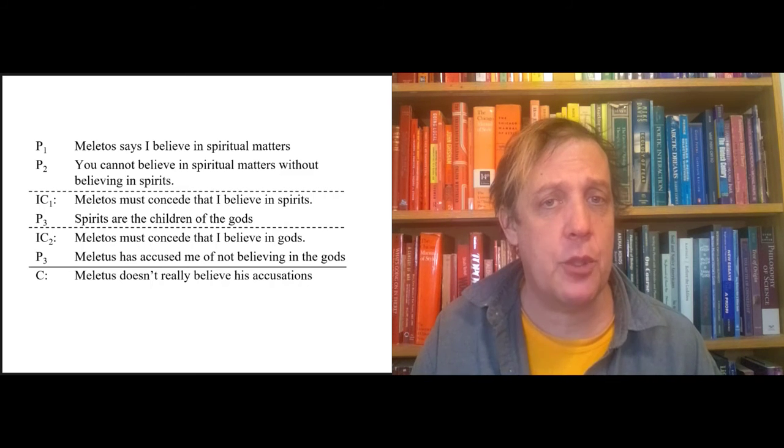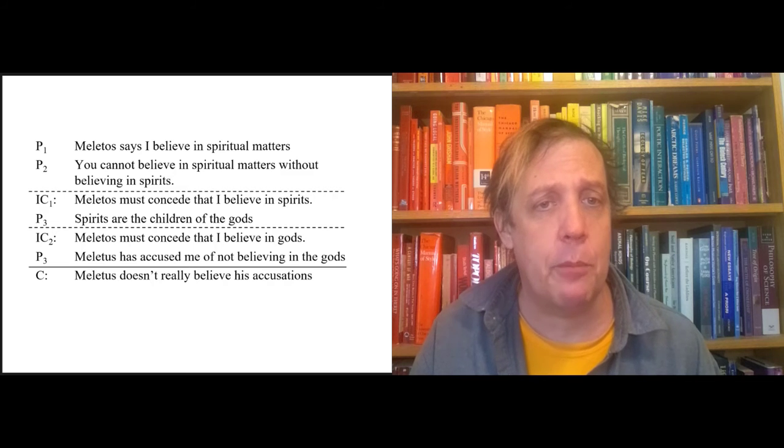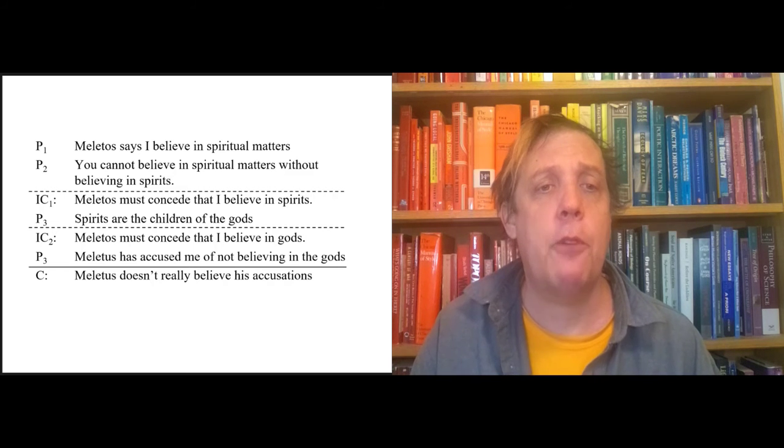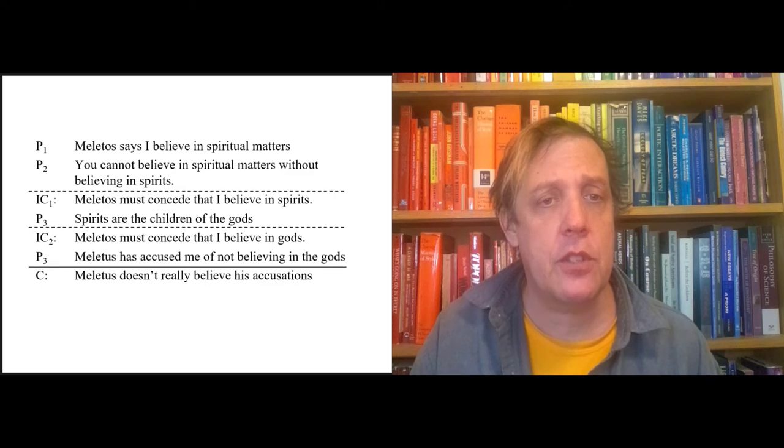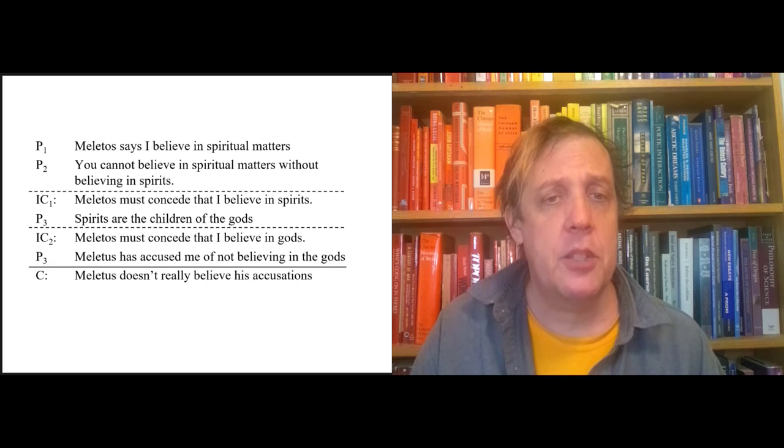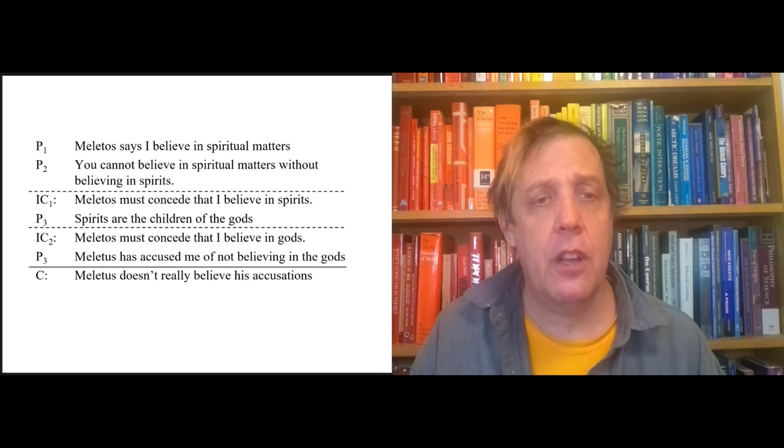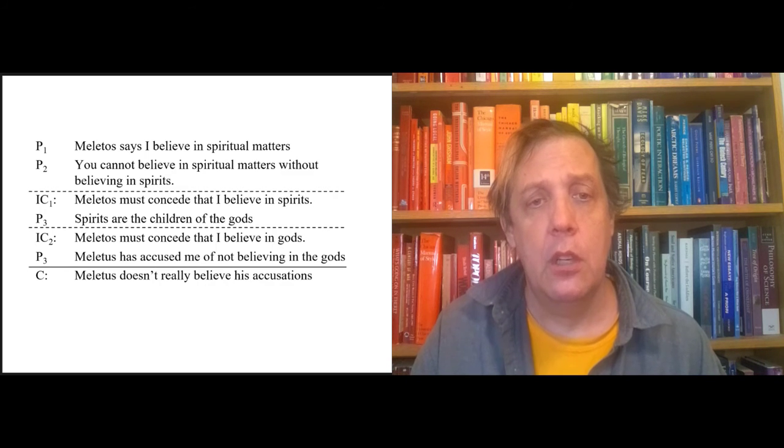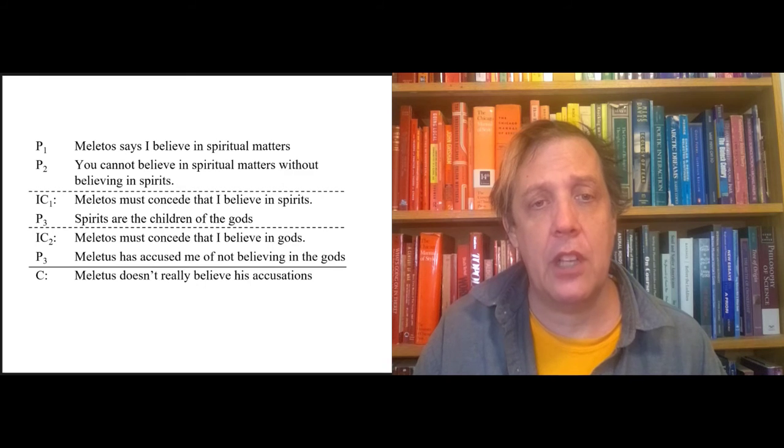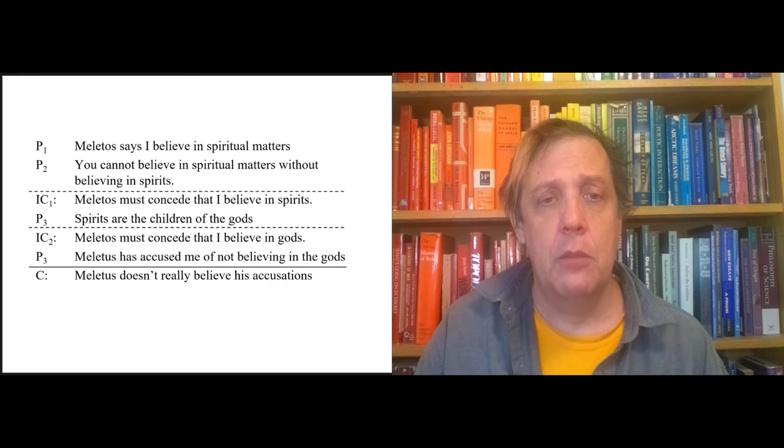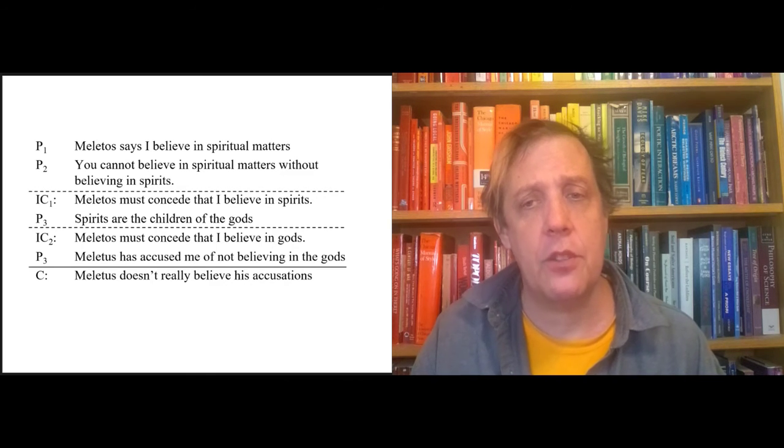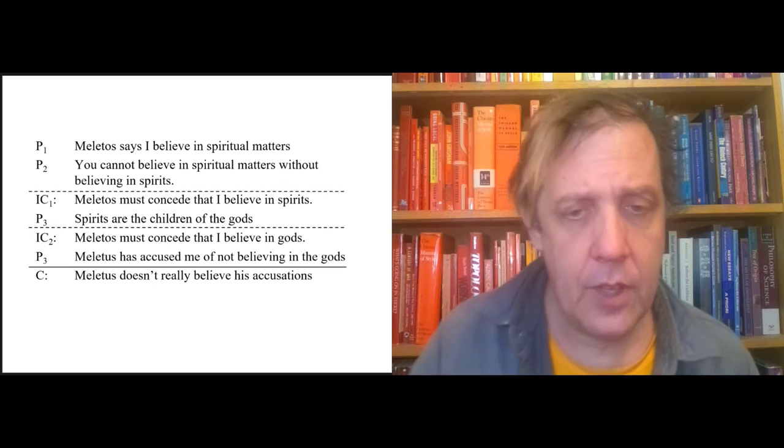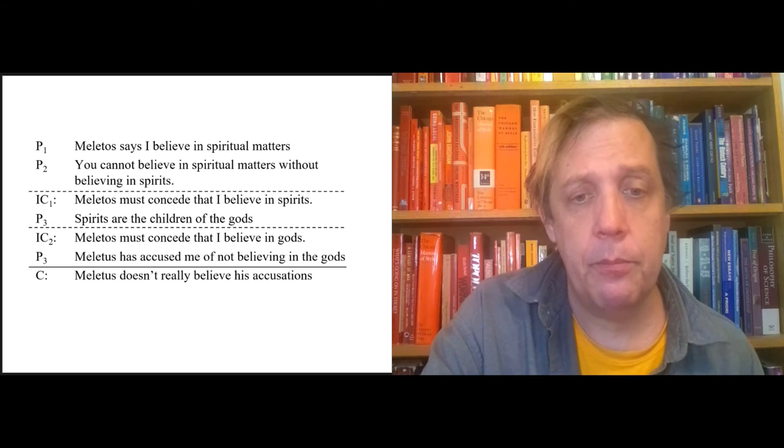So the full chain of arguments looks like this. Meletus says I believe in spiritual matters. You can't believe in spiritual matters without believing in spirits. Therefore, intermediate conclusion one, Meletus must concede that I believe in spirits. Premise three, spirits are children of the gods. Therefore, we get to intermediate conclusion two. Meletus must concede that I believe in gods. But he has accused me of not believing in the gods. Premise, that should be premise four. Therefore, Meletus doesn't really believe his accusations. So that's one statement. That's one argument.